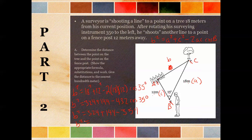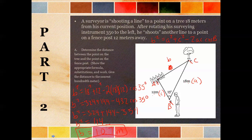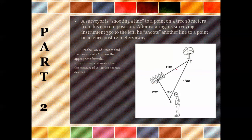Now we just go left to right: 324 plus 144, then subtract 354, which gives us b² = 114. So all we have to do is take the square root of 114, and we get b equals approximately 10.677 — so about 10.7 meters. We can round that up to 11 meters. So the distance from the tree to the fence post is approximately 10.7 meters, and that's the answer for Part A.